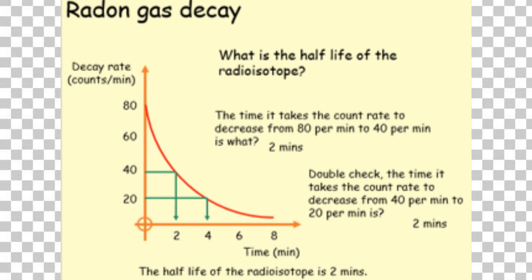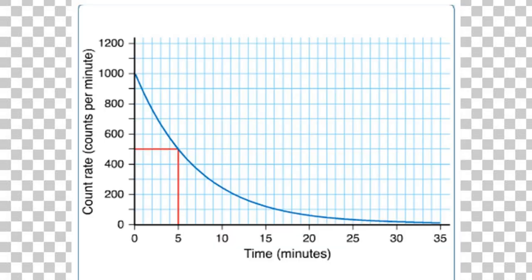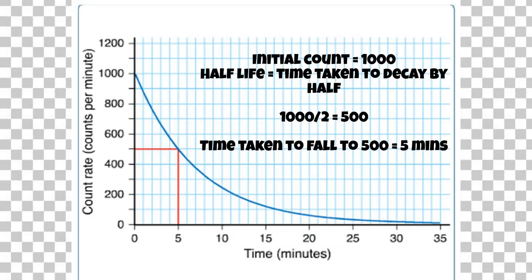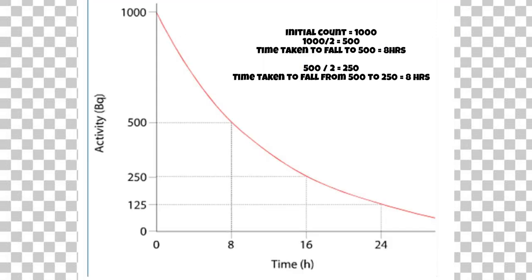To prove it: half of 40 is 20. How many minutes to go from 40 to 20? Two minutes. So the half-life of this isotope is two minutes. Let's look at another graph. It starts at 1000 counts. Half of 1000 is 500 — reading along the bottom, that takes five minutes. The half-life of this isotope is five minutes.